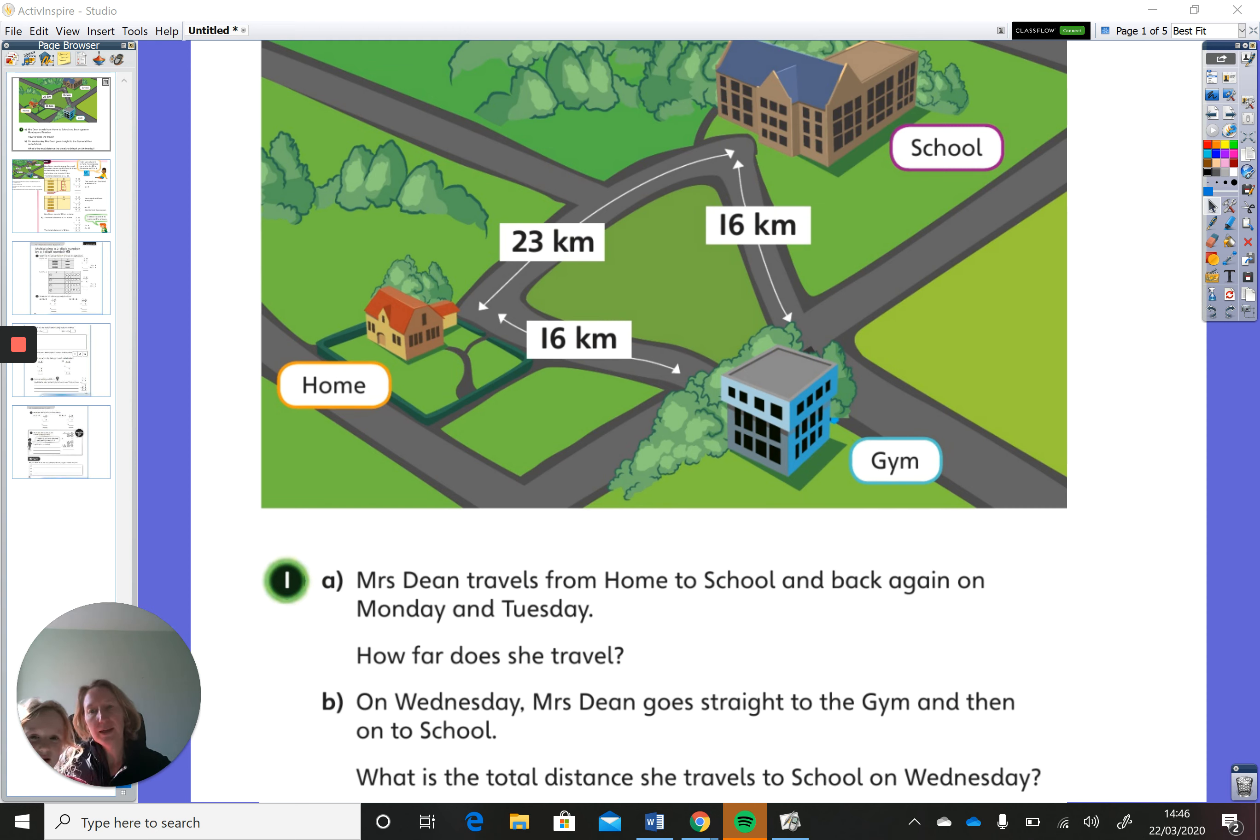So we're going to start off with a problem. As you can see on the board we have a map and it has three buildings. What are the three buildings? A gym, a school and a home. Fantastic, and then it shows you the distance between those buildings. So what is the distance between the school and the gym Emily? 16 kilometres. Fantastic. And what's the distance between the school and home? 23 kilometres. Good. And the distance between the home and gym? 16 kilometres. Fantastic.